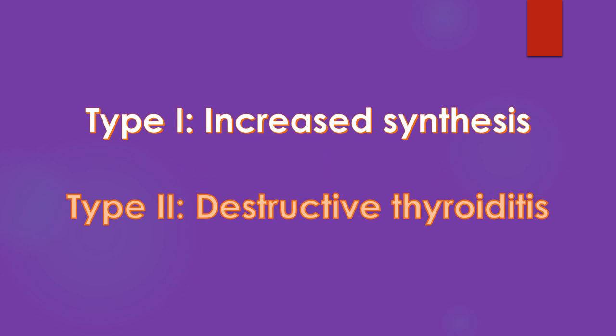Amiodarone-induced hyperthyroidism is less common than hypothyroidism. Amiodarone-induced hyperthyroidism has been classified into two types. Type 1 is due to excessive iodine-induced synthesis of thyroid hormone. Type 2 is due to amiodarone-induced destructive thyroiditis.